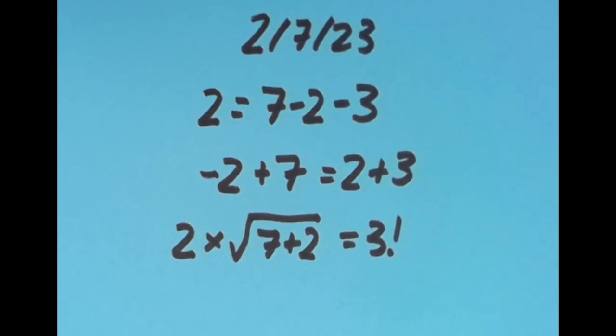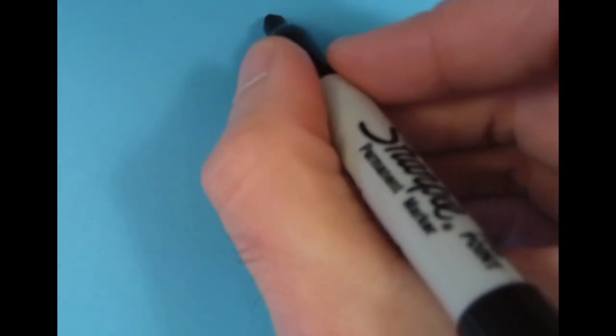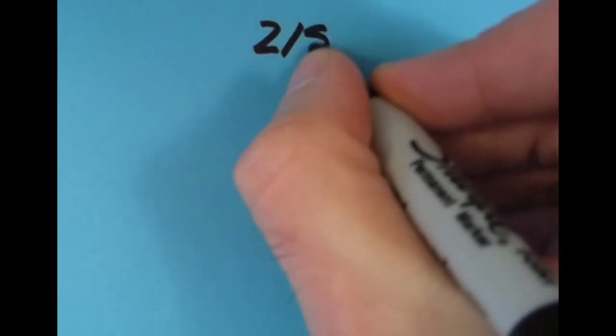Now tomorrow is going to be February 8th, so we can write the date as 2/8/23. Go ahead and see if you can come up with an equation for the digits in this date. I'll do the same thing and share my results in a new video tomorrow, and anything that you find interesting about this date you can go ahead and put in that video's comment section.